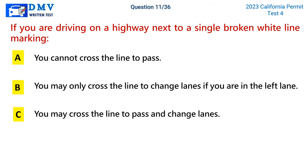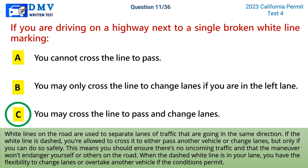Question 11: If you are driving on a highway next to a single broken white line marking. A) you cannot cross the line to pass, B) you may only cross the line to change lanes if you are in the left lane, C) you may cross the line to pass and change lanes. The correct answer is C. White lines separate lanes of traffic going in the same direction. If the white line is dashed, you're allowed to cross it to pass another vehicle or change lanes, but only if you can do so safely — ensuring no oncoming traffic and the maneuver won't endanger yourself or others.